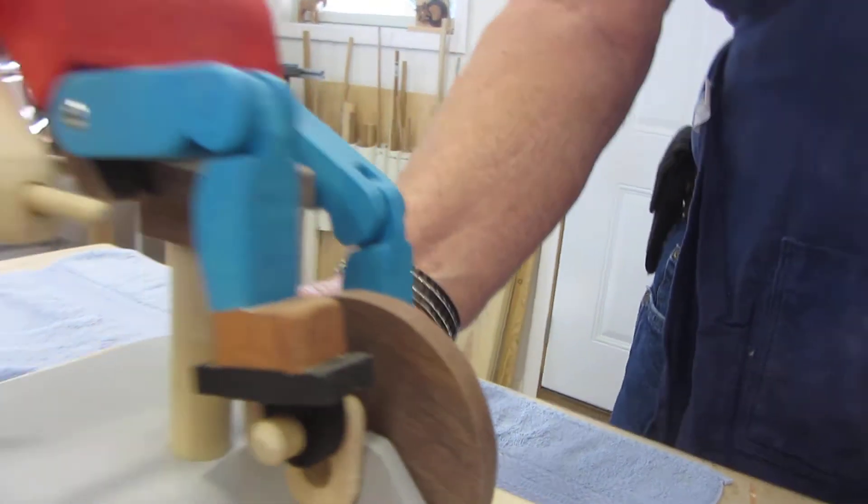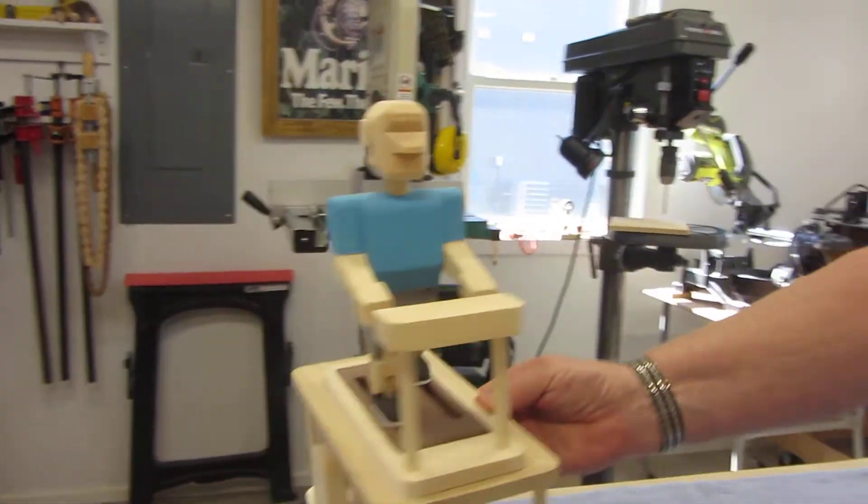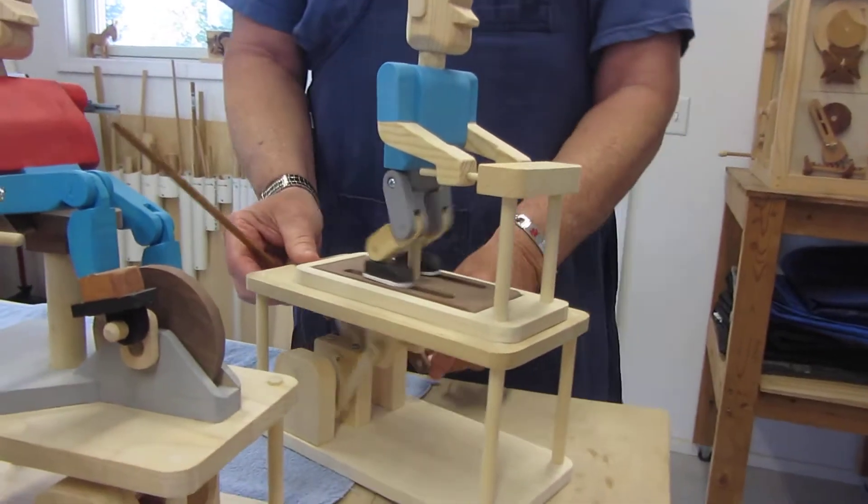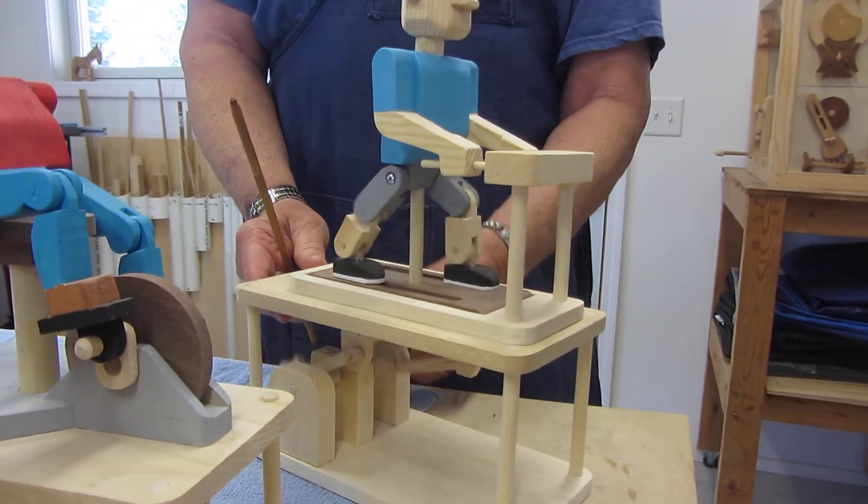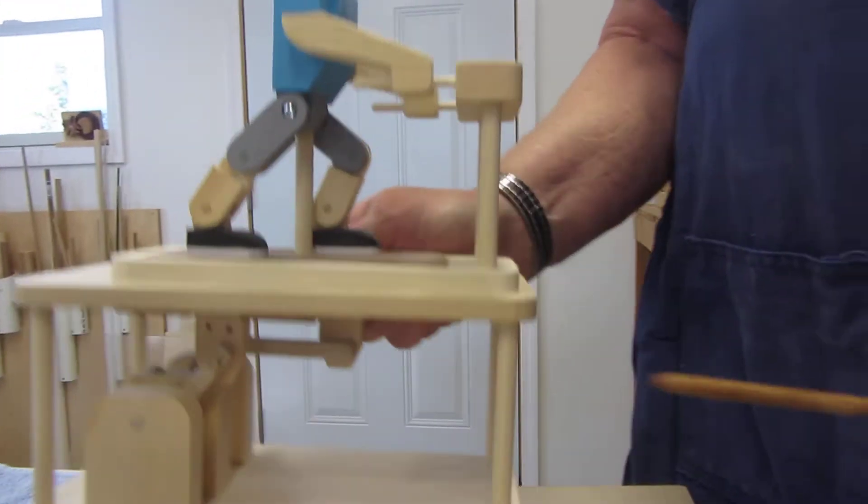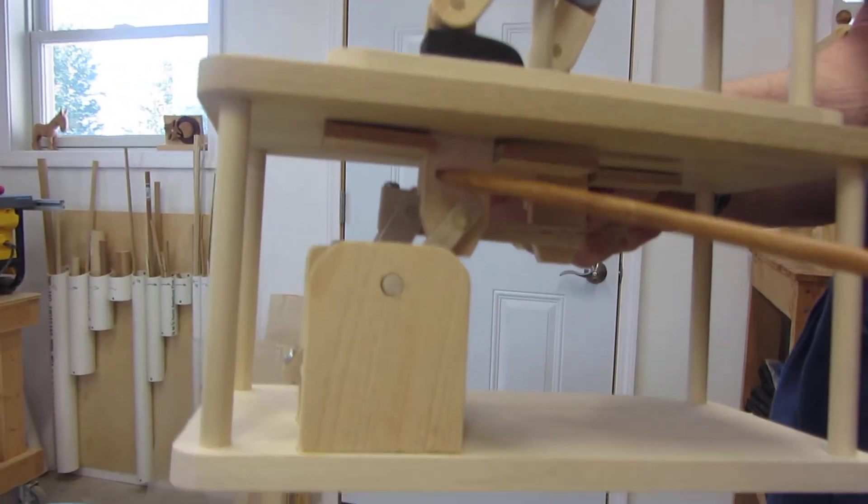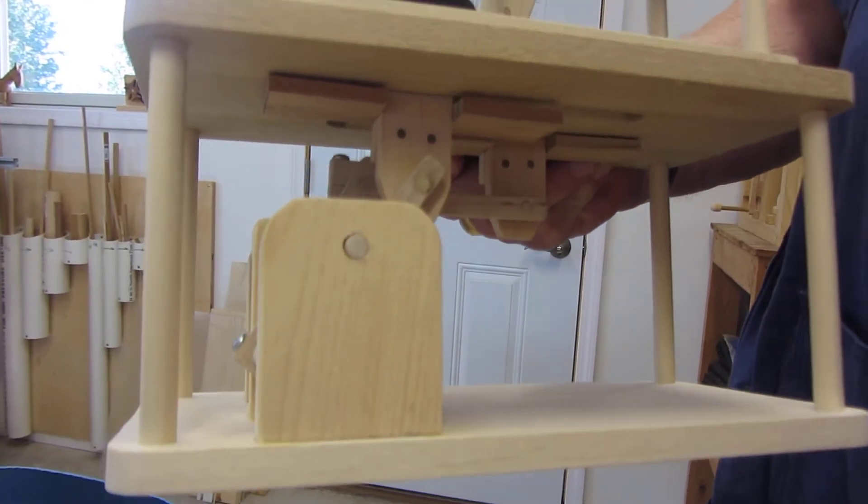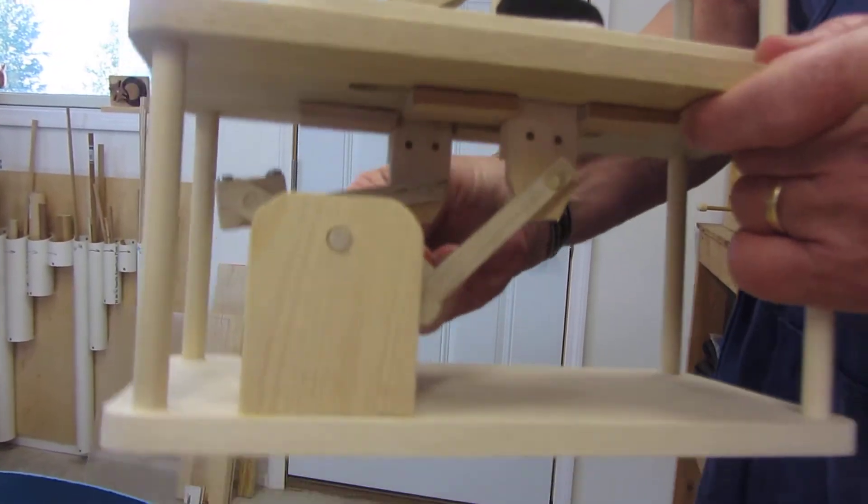And then for the last one, we have a treadmill. And this one, the mechanism is a little bit more complex. Here we have a crankshaft, just like you find in automotive engines. It's a two journal crankshaft. Let me turn it for you so you can see it in operation.